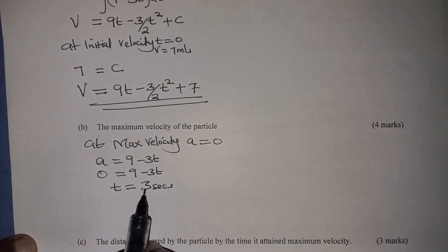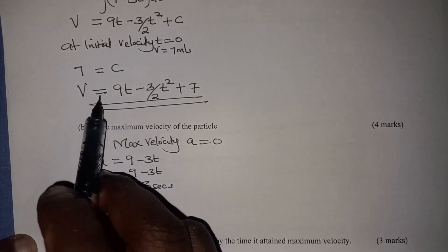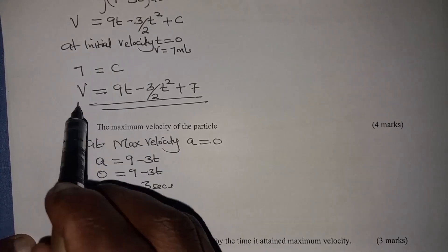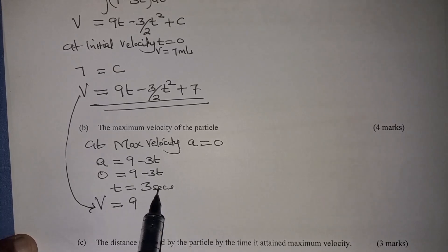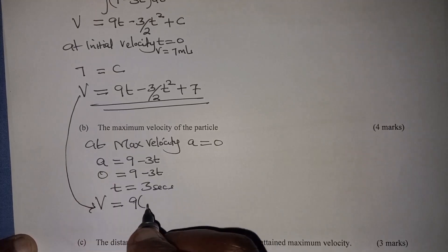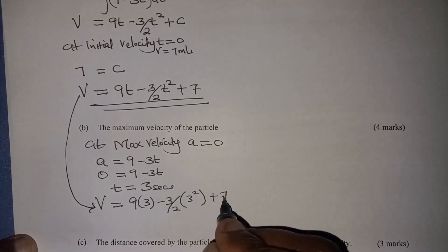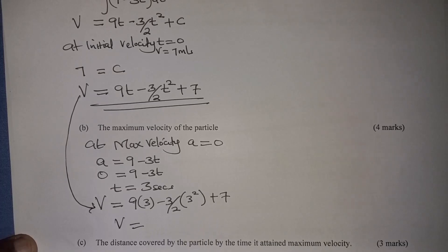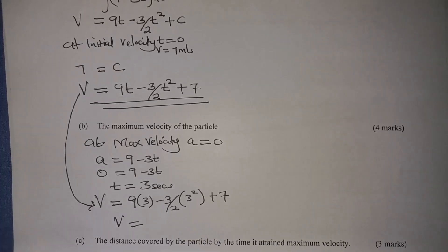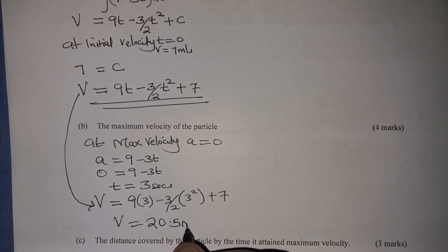This is the time it attained maximum velocity. To get maximum velocity, we go back to the expression for velocity and substitute t with 3. So it's 9 times 3 minus 3 over 2 times 3 squared, plus 7. When you work it out, this gives 20.5, or 20 and a half meters per second.